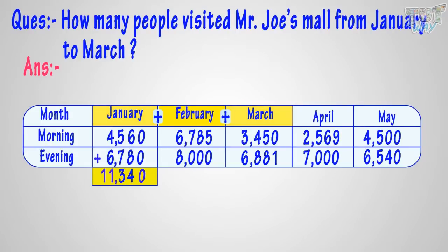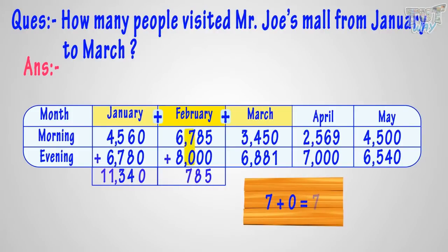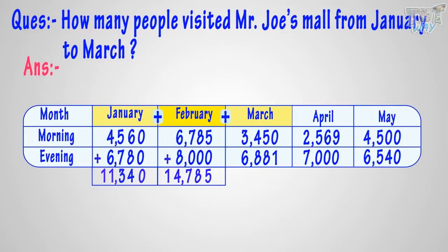People visited the mall in February. For this, we will add up the people who visited in the morning and evening. Adding 5 plus 0 equals 5, so write 5 in the sum at the 1's place. Adding 8 plus 0, we get 8. Adding 7 plus 0 equals 7, so write 7 in the sum at the 100's place. Adding 6 plus 8 equals 14. As they are the last digits we are adding, we don't have to carry over any digit, so write 14 in the sum. We get 14,785. So 14,785 people visited the mall in the month of February.